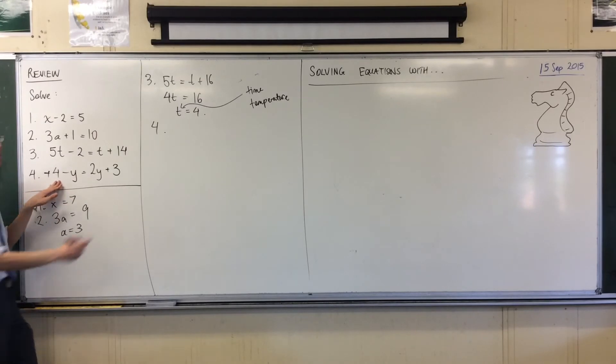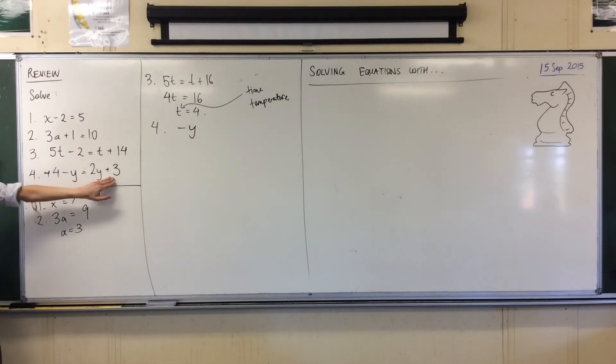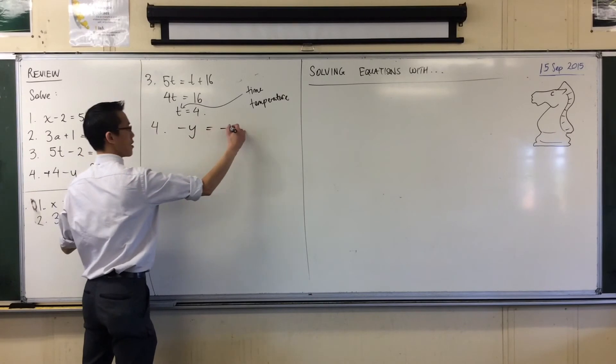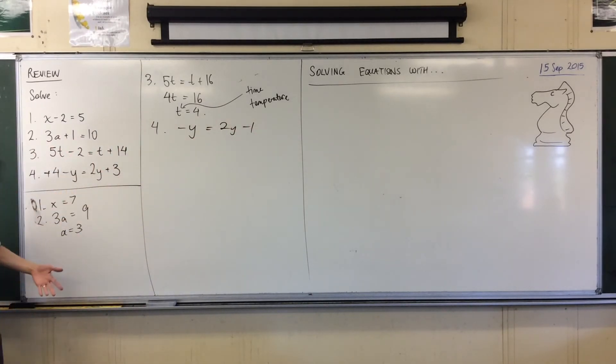So when I take away 4 from this side, I just get left with minus y. When I take away 4 from this side, it's going to be 3 take away 4, which is minus 1.